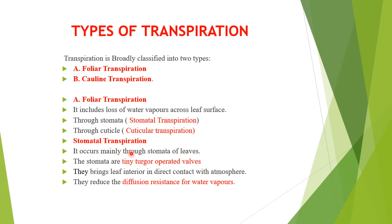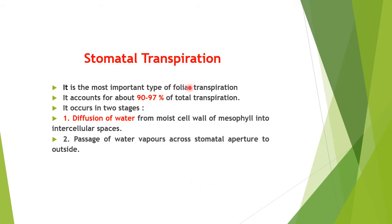Stomatal transpiration occurs mainly through stomata of leaves. The stomata are tiny turgor-operated valves that bring the leaf interior into direct contact with the atmosphere and reduce the diffusion resistance for water vapors. It accounts for about 90–97% of total transpiration. It occurs in two stages: first, diffusion of water from moist cell walls of mesophyll cells into intercellular spaces; second, passage of water vapors across the stomatal aperture to the outside.